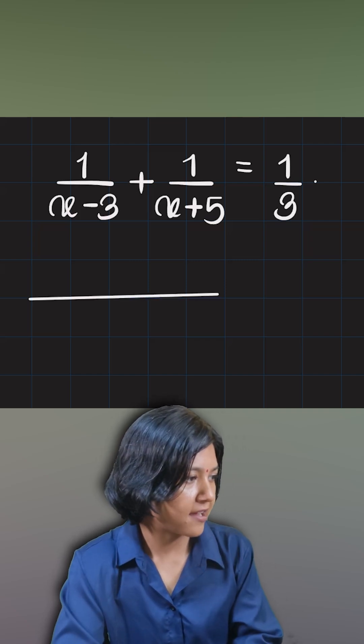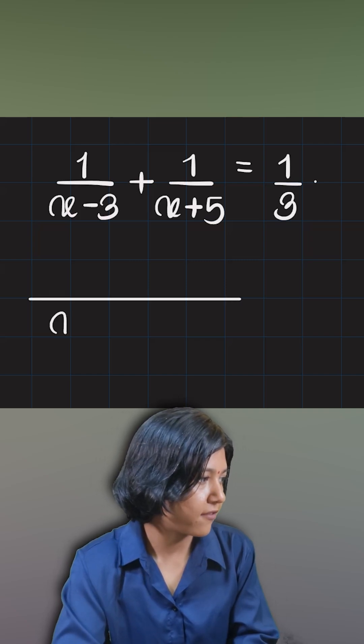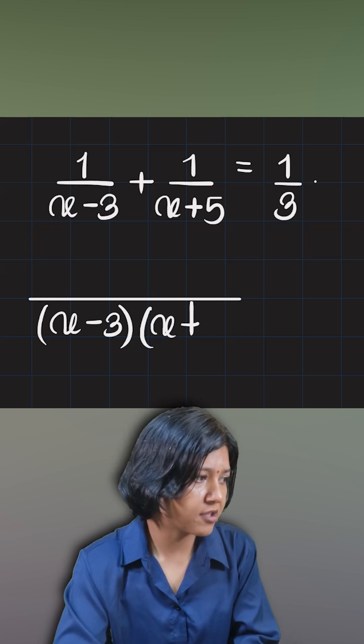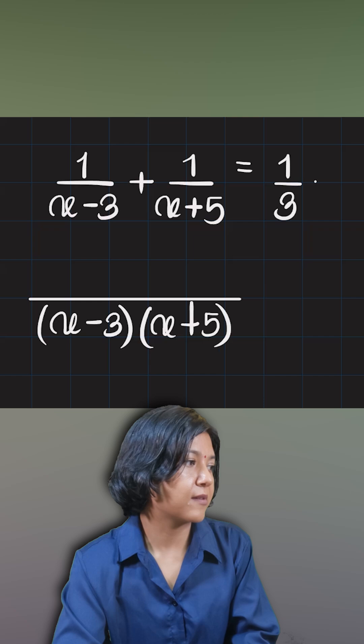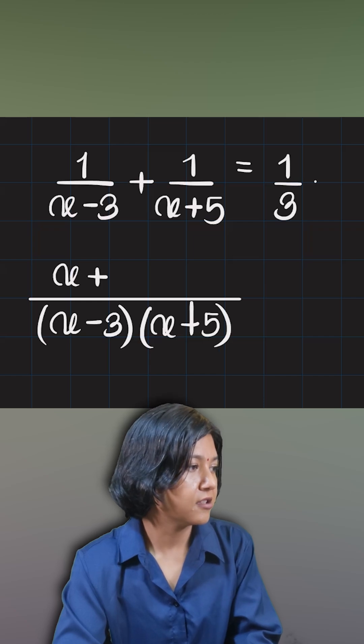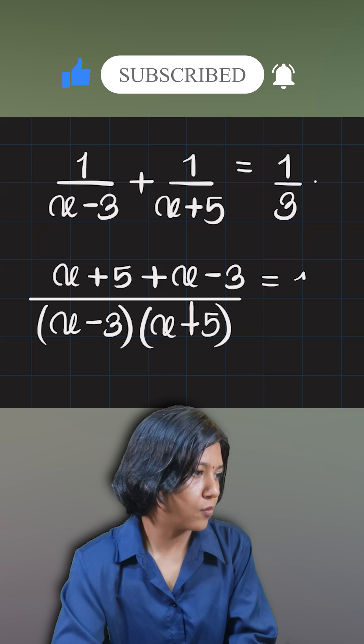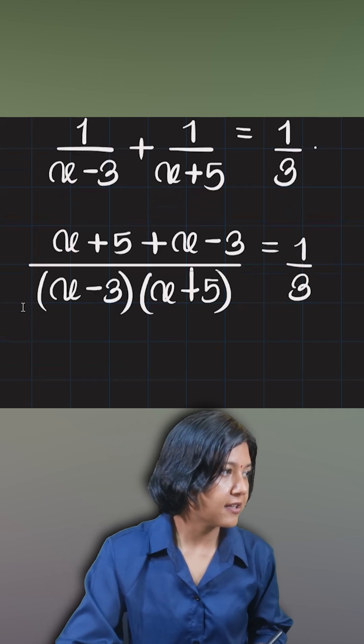When you get this form, the quickest thing you do is you always take the common denominator as the product of the two terms that we have. X minus three times x plus five becomes our product, our common denominator. And my numerator simply gets cross multiplied with the opposite denominator, giving me x plus five plus x minus three equals to one third.